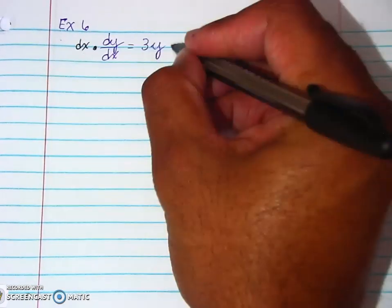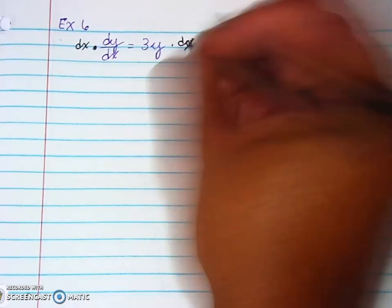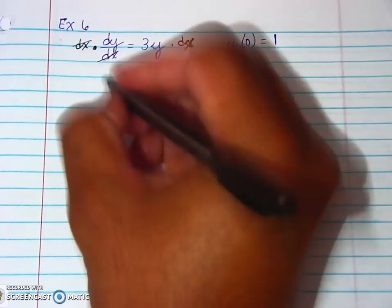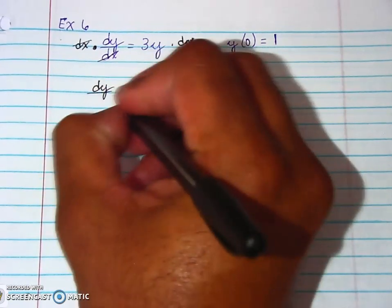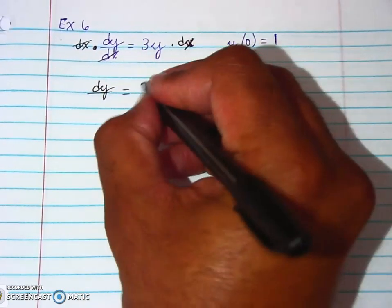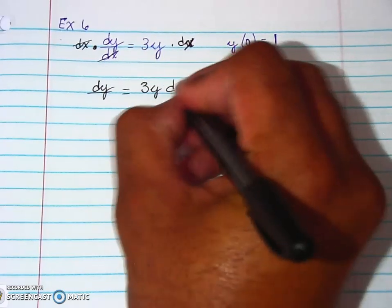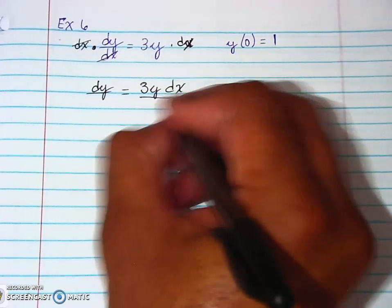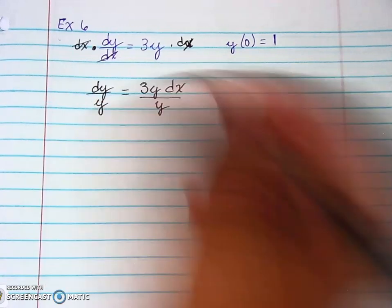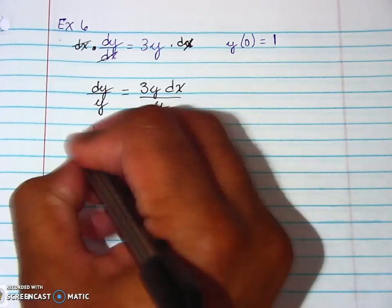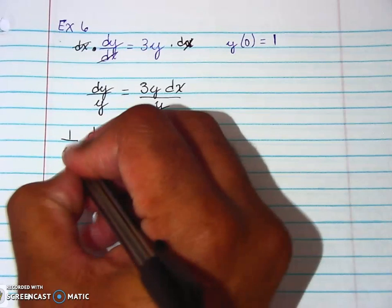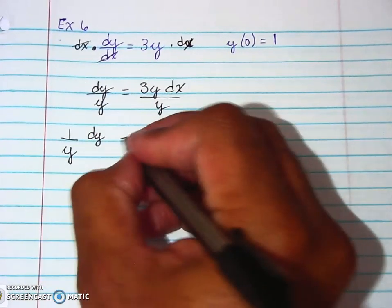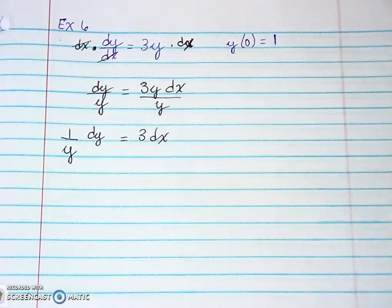Here we're going to multiply both sides by dx. So that way the dx is cancelled, we have dy equals 3y dx. And instead of dividing by 3y, we're just going to divide by y. So technically we have 1 over y dy equals 3 dx.